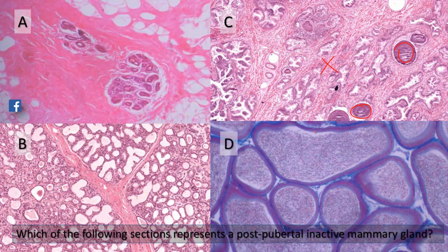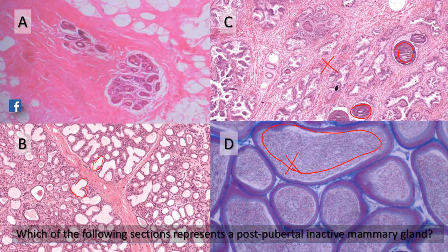In another section, you can see the profiles of a highly convoluted tube which contains multiple cells in the lumen. These are spermatozoa, and so this is the epididymis — not the breast. Section B shows acini of glandular tissue, multiple acini, with some ducts as well.